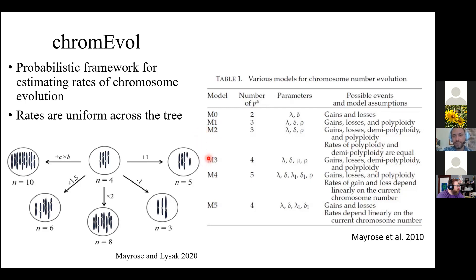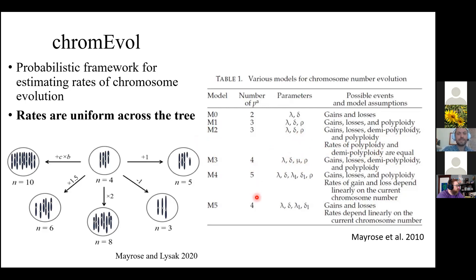In my analyses, the best-fitting models are always M2 and M3. M2 has parameters for gains, losses, and duplication, with polyploidy and demi-polyploidy rates constrained to be equal. M3 introduces a separate rate for demi-polyploidy so it can vary from the polyploidy rate. An important limitation of ChromoVol is that it assumes rates are uniform across the tree, so it is not possible to determine whether a single branch or subtree contributes disproportionately to an estimated rate.